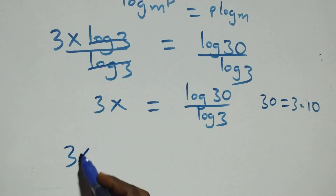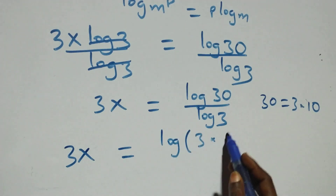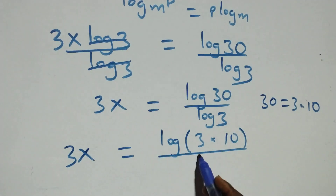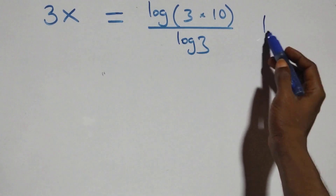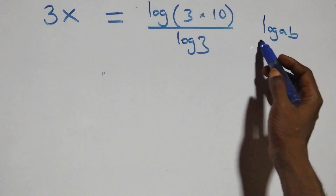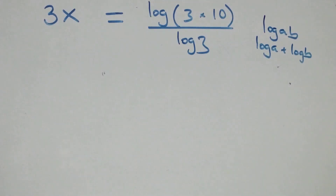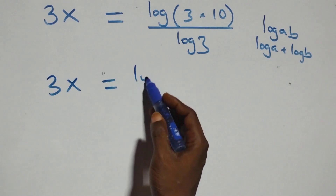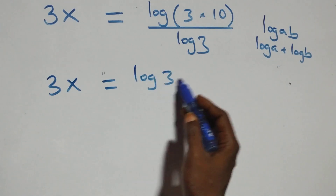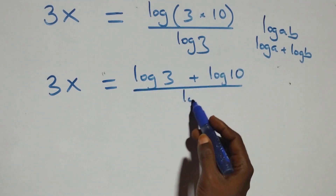Which implies, here we have 3x equals log (3 times 10) over log 3. Here we apply the law of logarithm: when we have log a times b, this is the same thing as log a plus log b. That is, all we have here becomes 3x equals log 3 plus log 10, all over log 3.